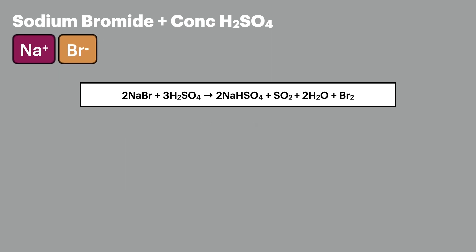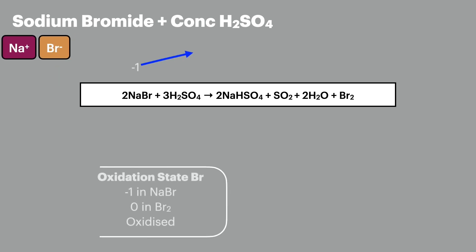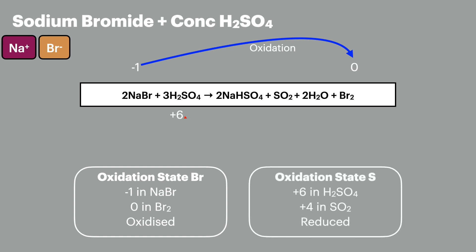To show this as a redox reaction: bromine goes from minus one in sodium bromide to zero in bromine, so it has been oxidized. And sulfur goes from plus six in sulfuric acid to plus four in sulfur dioxide, so it has been reduced.